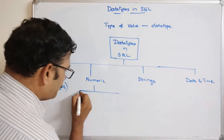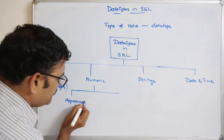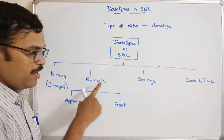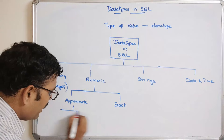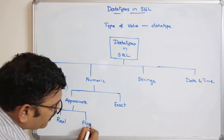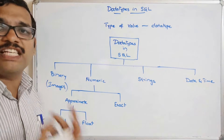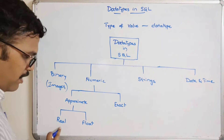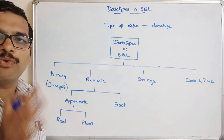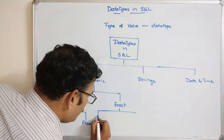Coming to numeric, it is again divided into two types: approximate and exact. Approximate numeric data types include real and float — these are for attributes holding values with decimal points. The major difference between real and float is the range of values they support.